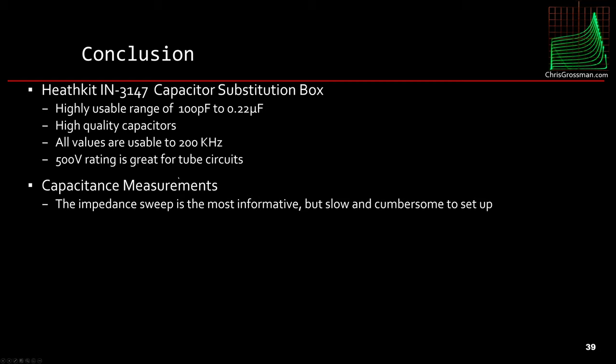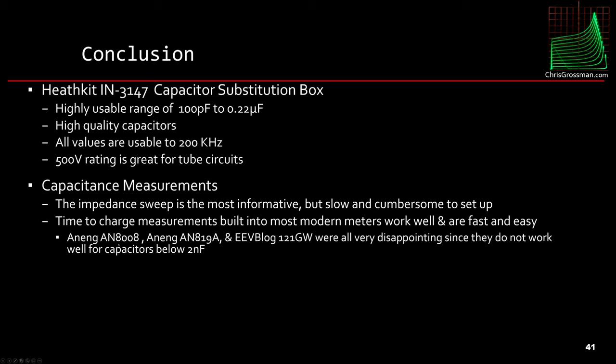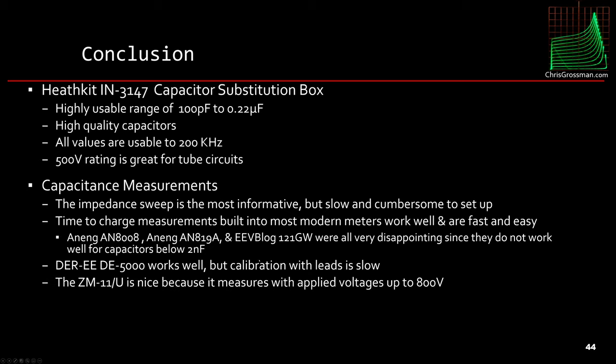Now for capacitance measurements, the impedance sweep method was the most informative, but it's slow and cumbersome to set up, so I don't do it very often. But it was useful as an exercise for this. The time-to-charge measurements built into most modern meters work well and are fast and easy. However, the Aneng meters and the EEVblog meters are all very disappointing since they do not work well for capacitors below 2 nanofarads. The Duree DE-5000 meter works well, but calibration with leads is slow. And the ZM-11U is a nice unit because it measures with applied voltages up to 800 volts. I didn't do that here, but that's really one of the most useful things it does. It also measures leakage current in electrolytic capacitors, which is good if you work in old tube gear.